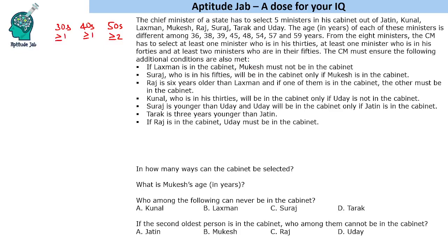First, let us find out the ages of these ministers, because certain conditions like 'Suraj is in his 50s' and 'Kunal is in his 30s' will help us determine who can be selected. The condition for selection is based on ages as well. So let us write these names: J, K, L, M, R, S, T, U.